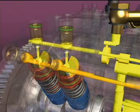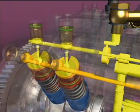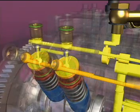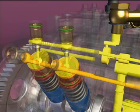Fuel that leaks past the barrel and plunger is collected in a drilling in the pump head and routed to the air bleed circuit for return to the fuel tank.